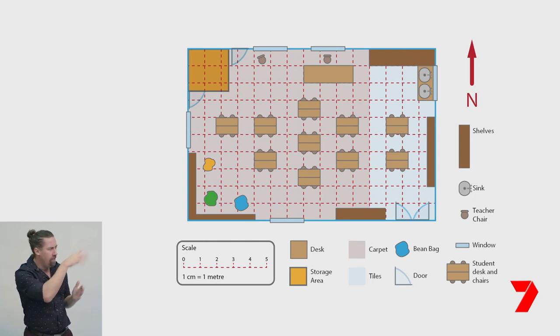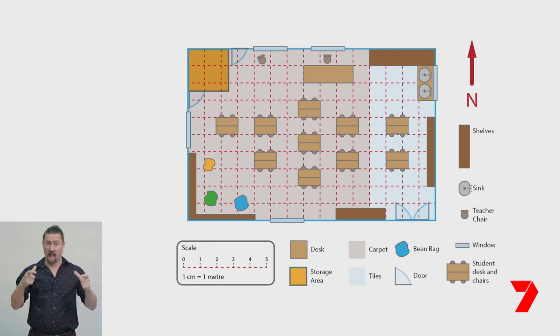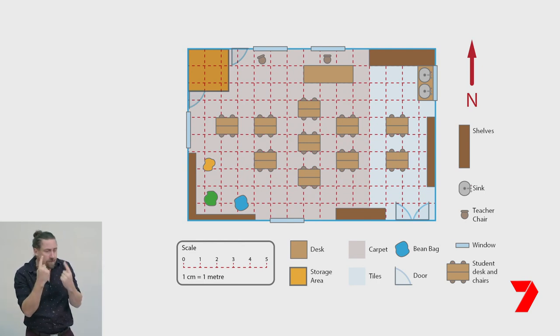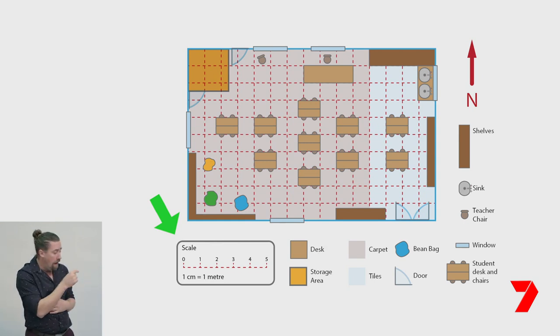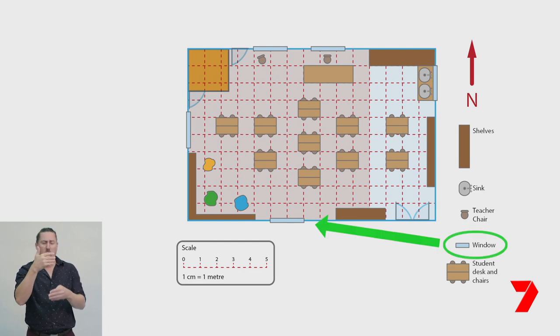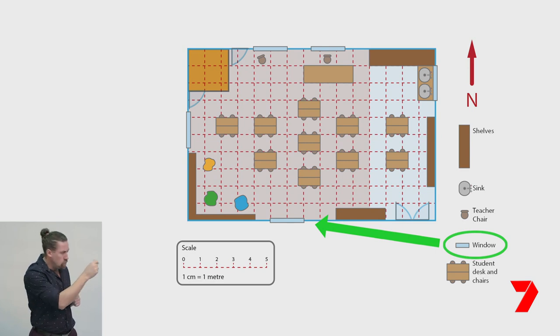I think we are ready to try using a different map with all the common map features — a compass point showing north, legend, icons, and a scale. This map also has a grid to help us measure distances. We are going to use the plan of a classroom to practice using a different scale. The scale on the classroom plan is one centimetre represents one metre, so each square represents one metre in real life. The length of the window on the map is two squares, or two centimetres, so the window is two metres long in real life.